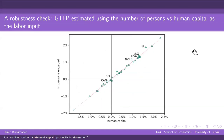Regarding alternative input measures: comparing what happens if we use human capital instead of number of persons engaged, the difference between these alternative productivity measures — when we change the specification of the labour input — doesn't make a huge difference to the green TFP results. Overall, these green TFP measures are rather robust to changes in how specifically the inputs are measured.